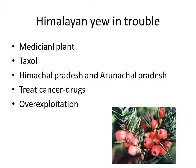The Himalayan Yew is a medicinal plant found in various parts of Himachal Pradesh and Arunachal Pradesh. It contains a chemical compound called Taxol, extracted from the bark, needles, twigs and roots, which has been successfully used to treat some cancers. It is now the biggest selling anti-cancer drug in the world, but the species is under great threat due to over-exploitation. In the last decade, thousands of trees have dried up in Himachal Pradesh and Arunachal Pradesh.